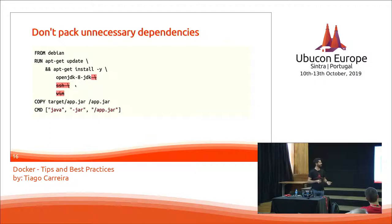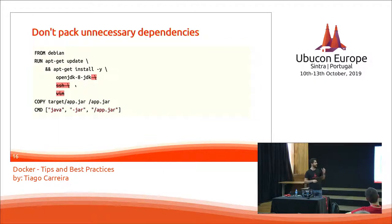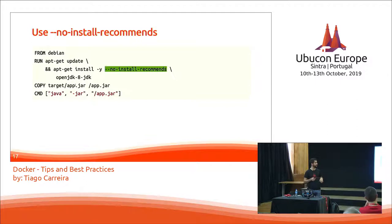Don't pack unnecessary dependencies. On Docker containers we don't need SSH or Vim or similar tools. If we really need to enter a running container during development, you can use the docker exec command — that will do just that. Removing unnecessary dependencies also improves security: fewer packages means less software, which means fewer attack vectors. Also use the --no-install-recommends flag with apt-get install, so it doesn't install unnecessary dependencies.